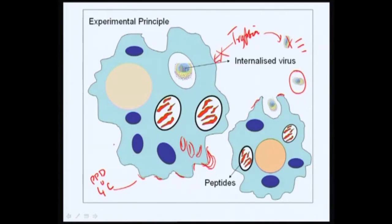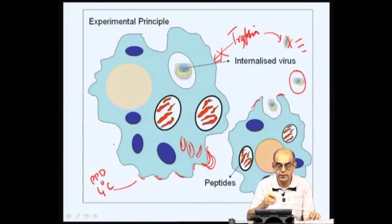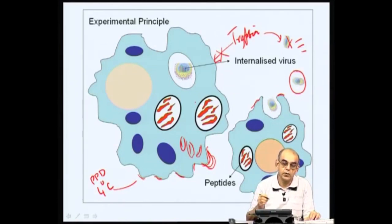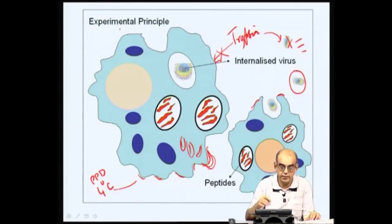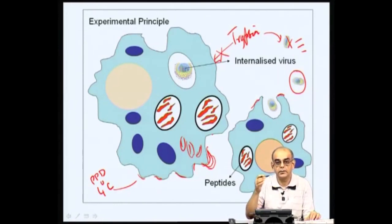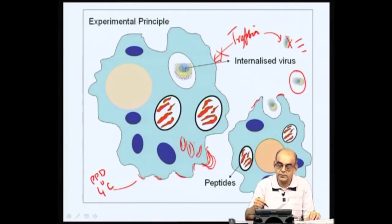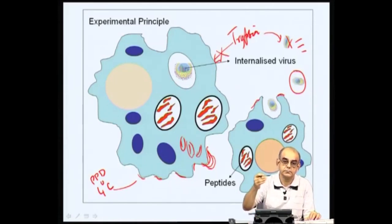They exposed the mixture containing peritoneal exudate cells — which had T cells already activated because the guinea pig was immunized to PPD — and looked at the proliferation of these T cells when they added these so-called pulsed macrophages. 'Pulsed' because you pulse the macrophages with PPD at 4 degrees, then wash off the rest of the PPD, so no PPD remains except that sticking to the cell membranes. Upon transfer to 37 degrees for various periods, the peptide would be internalized, making it inaccessible to trypsin.